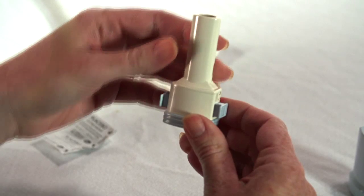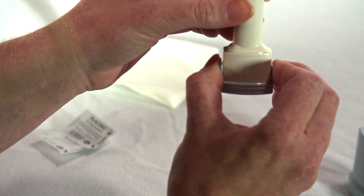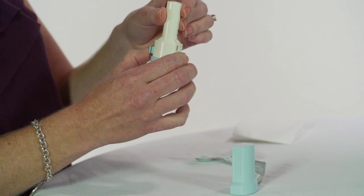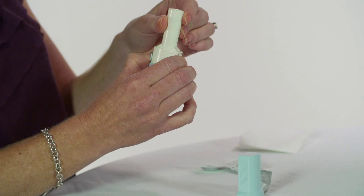Hold the Airelyzer upright. Squeeze the two side buttons to puncture the capsule. This piercing action allows the medicine to be released when the patient inhales.